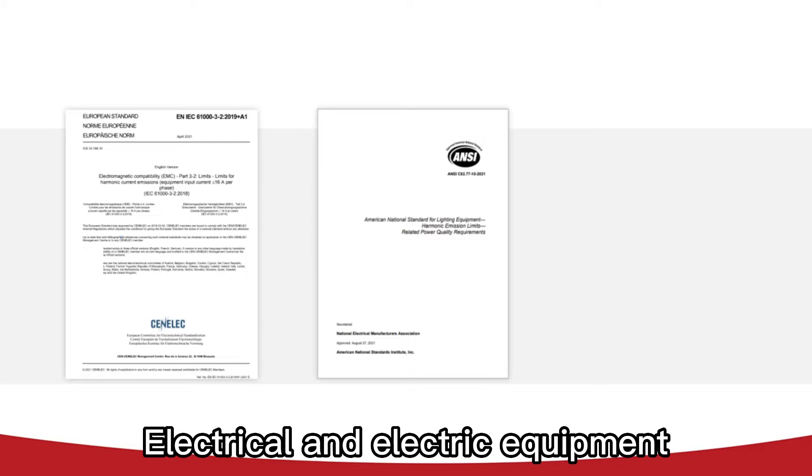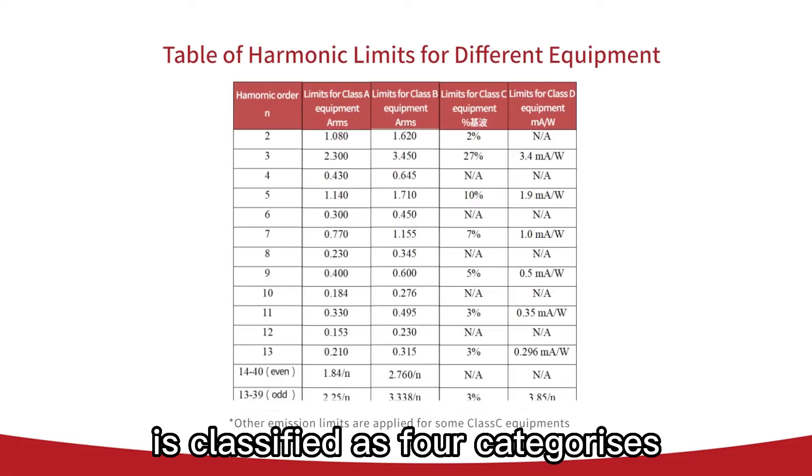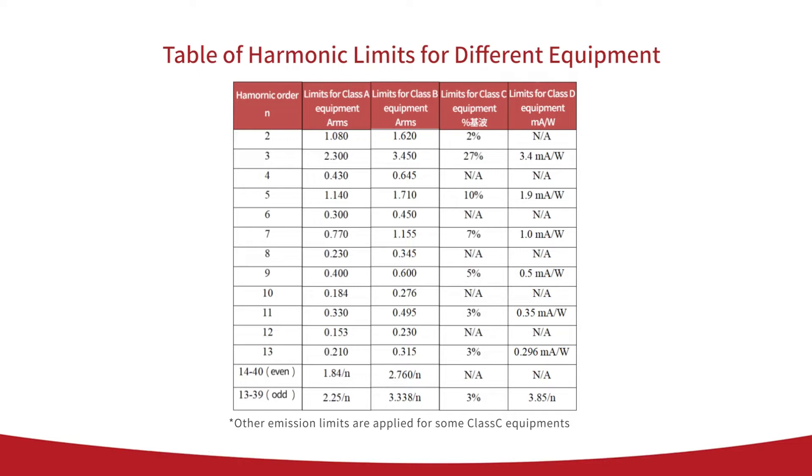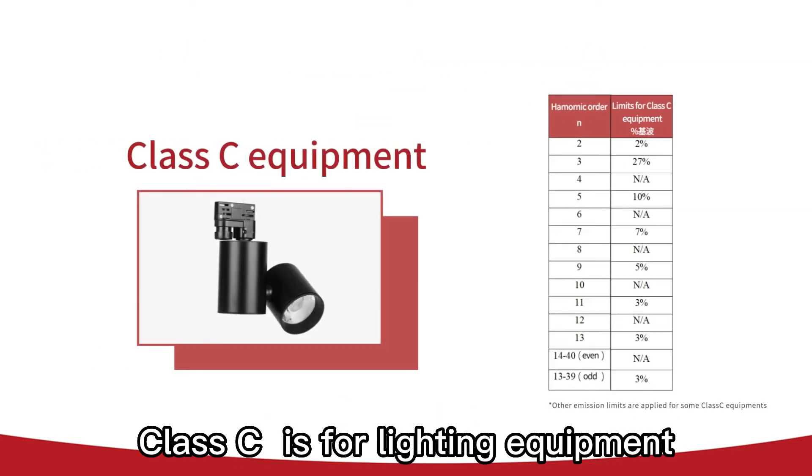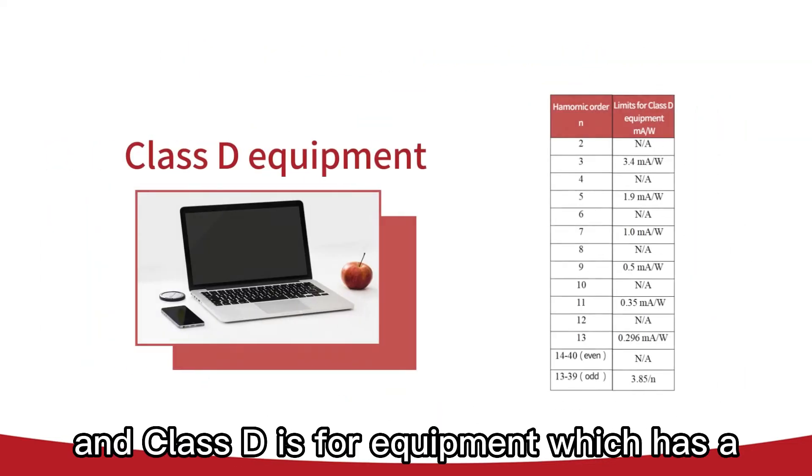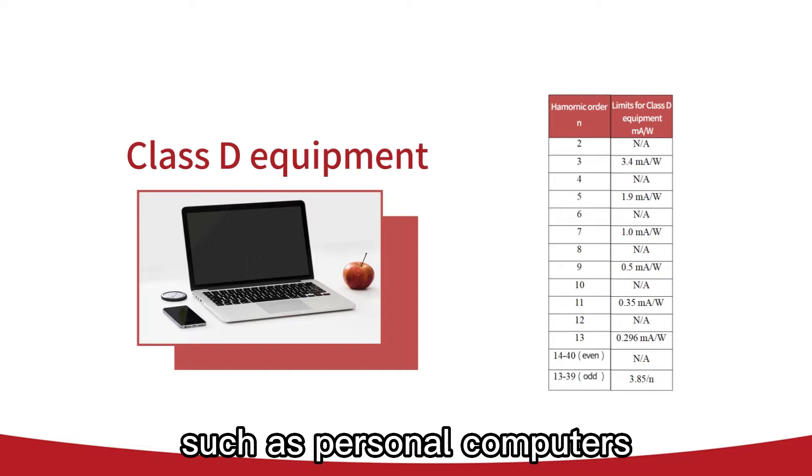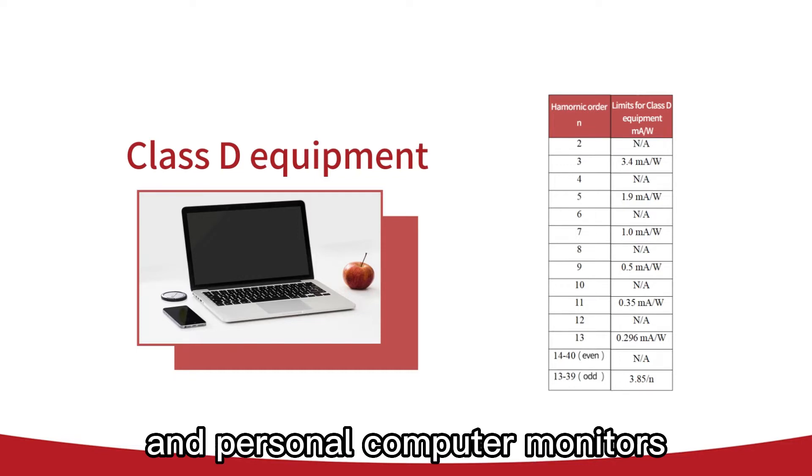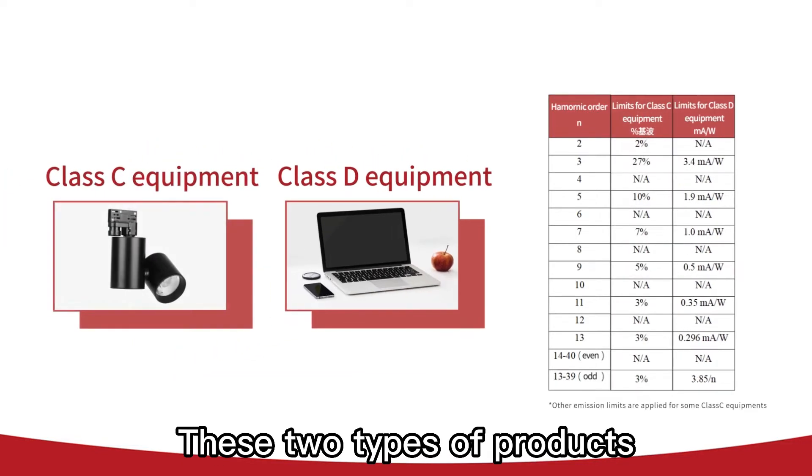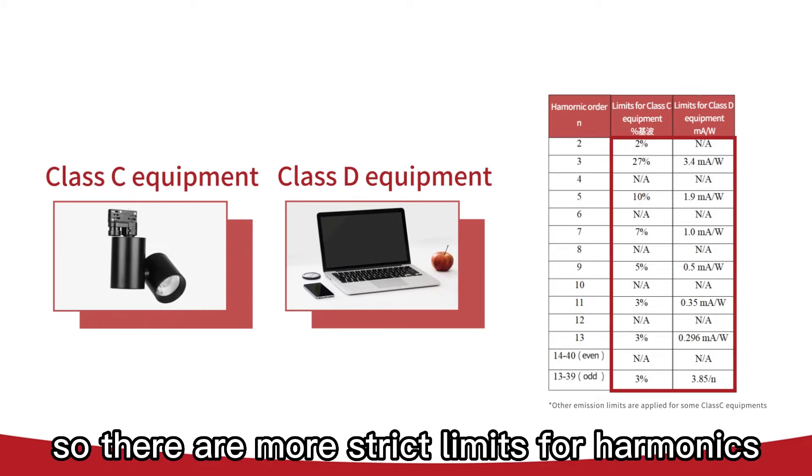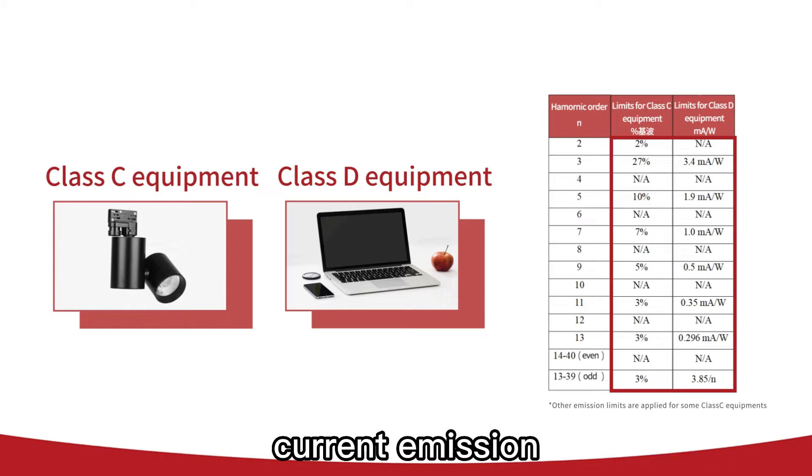Electrical and electronic equipment is classified as four categories according to the latest IEC standard. Class C is for lighting equipment and Class D is for equipment with specified power less than or equal to 600 watts such as personal computers and personal computer monitors. These two types of products are numerous and frequently used daily, so there are more strict limits for harmonic current emission.